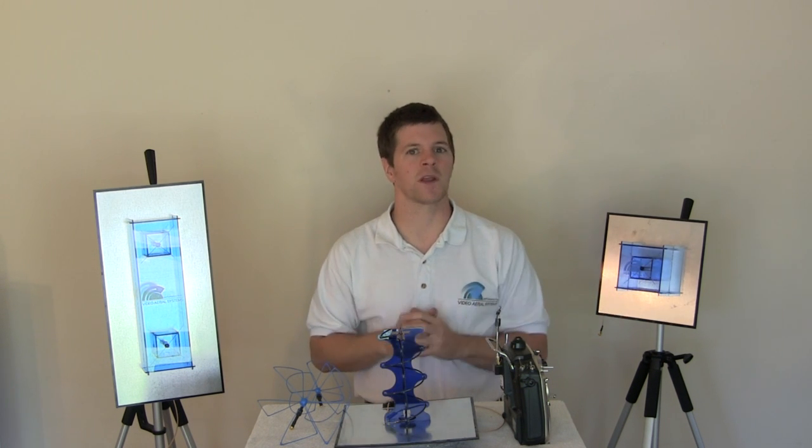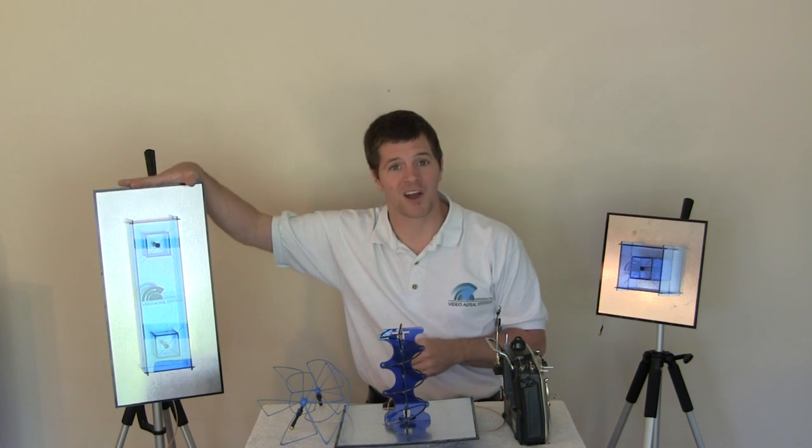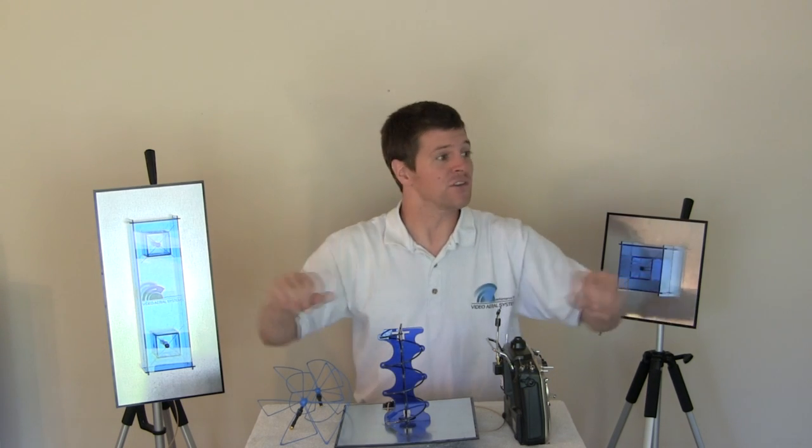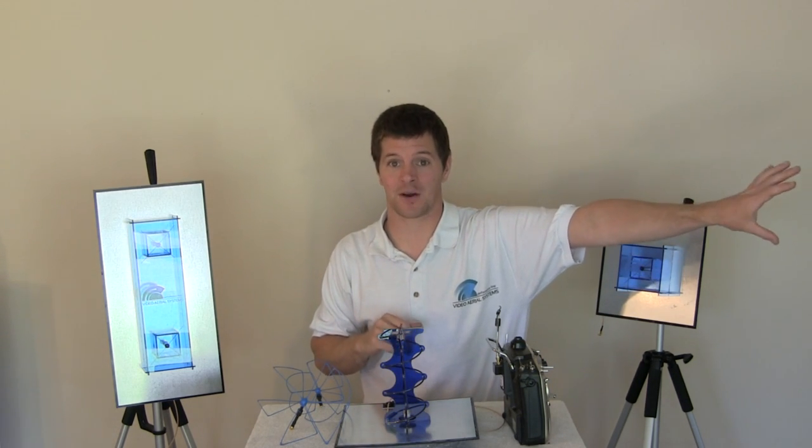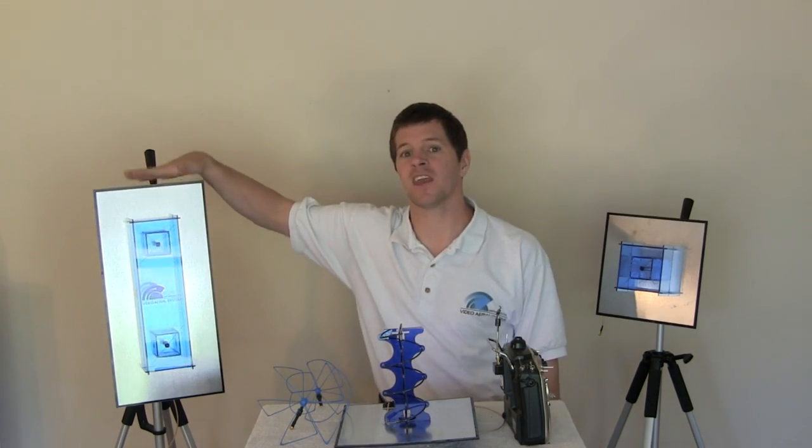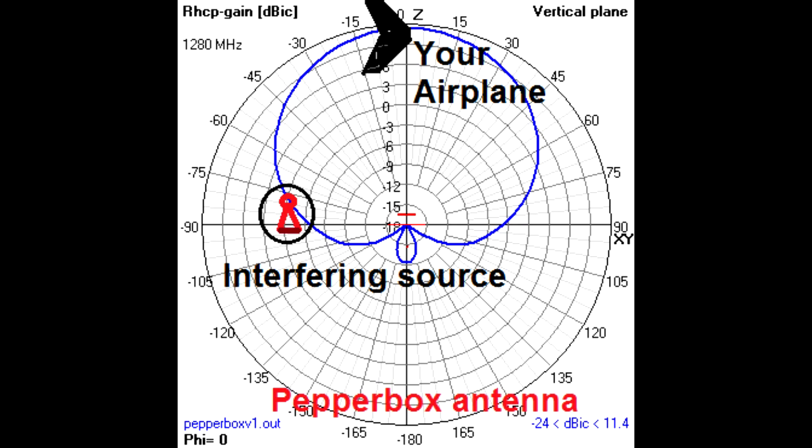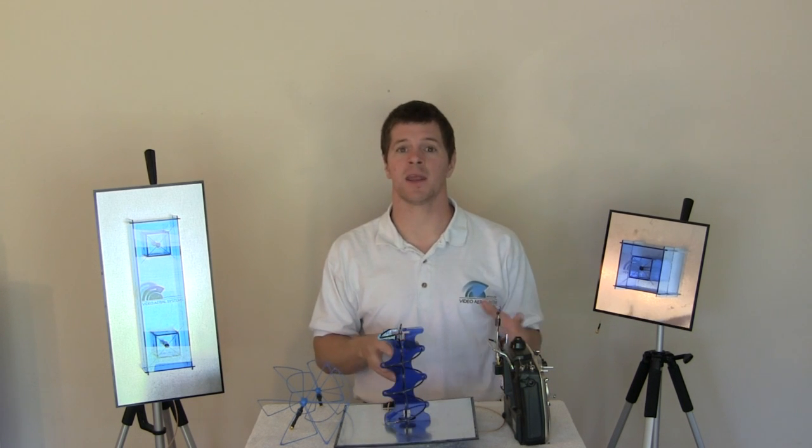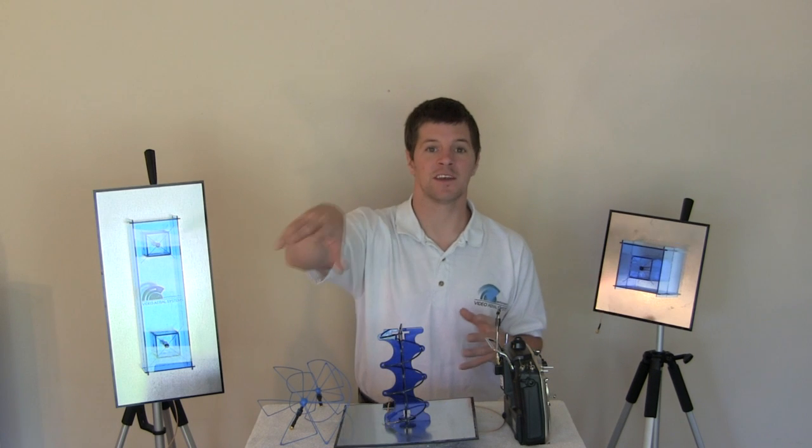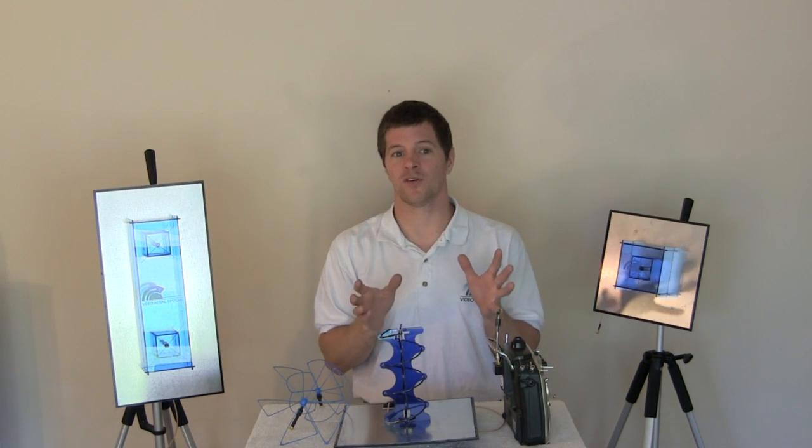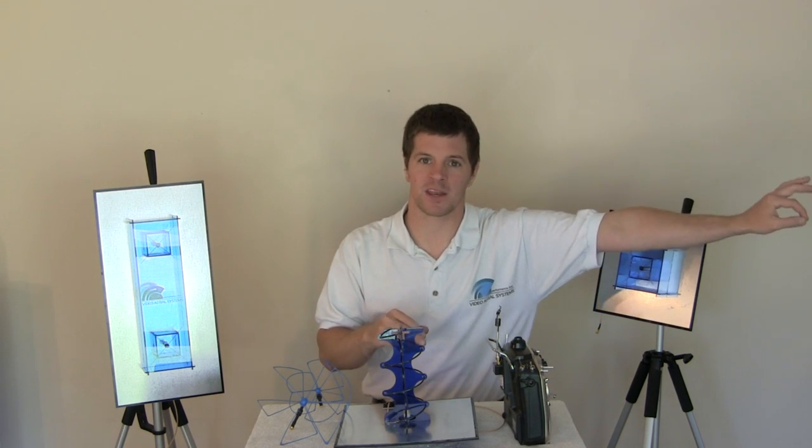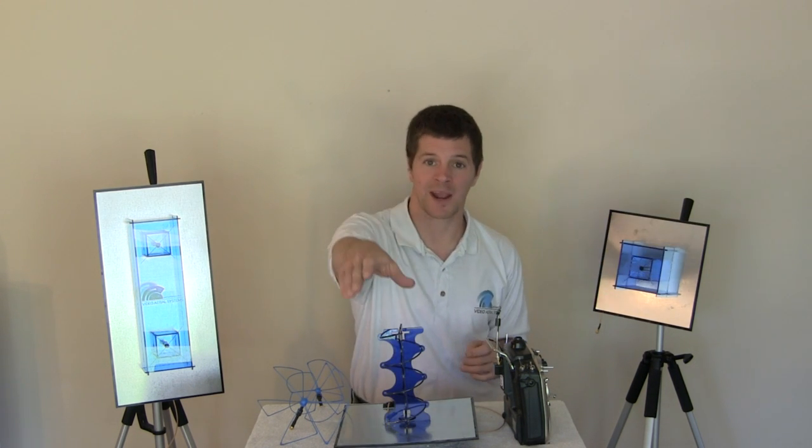That does not mean they all work equally well. Remember that the pepper box has a 180 degree beam, so it listens 90 degrees off of center. So that 80 degree off of center signal is going to be received by the pepper box stronger than my crosshair or my helical antenna. So if I've got a competing source off in the distance, I'm going to want to choose an antenna with a narrower beam such that it won't pick up that competing source nearly as well as my aircraft.